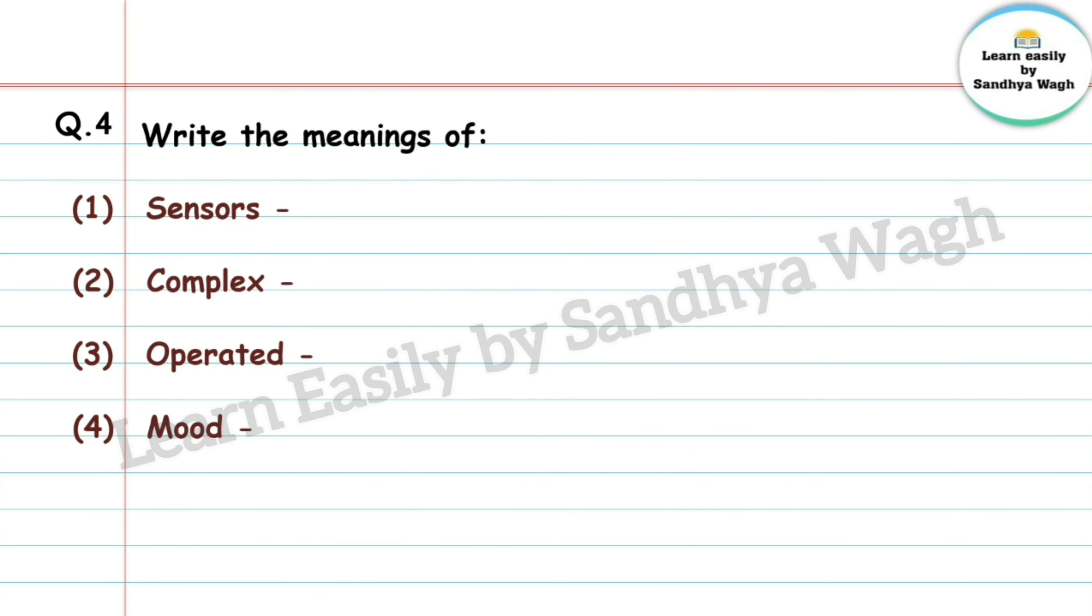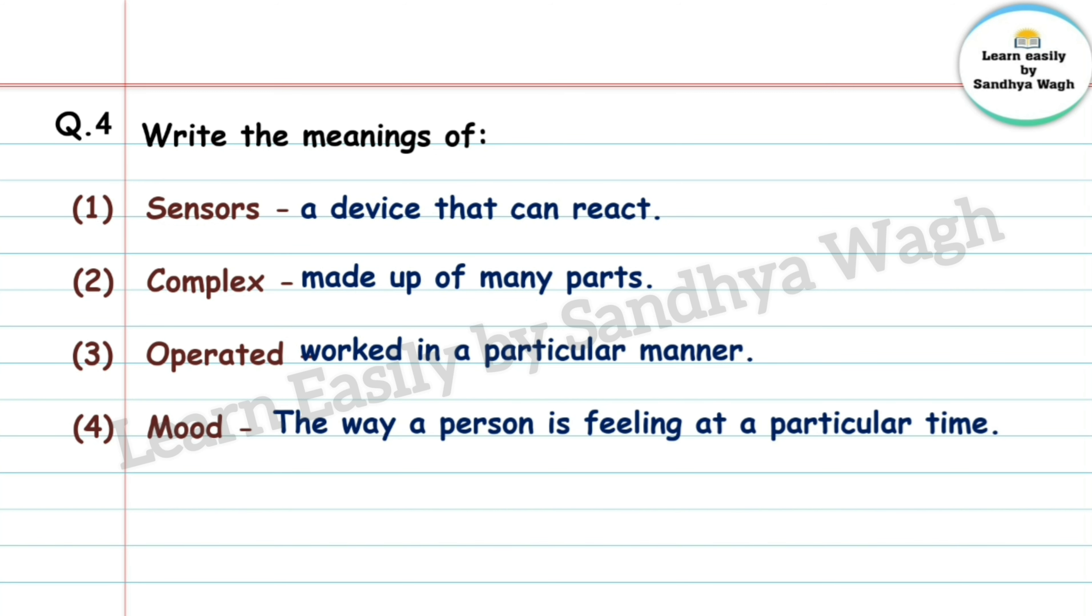Question 4: Write the meanings. Sensors means a device that can react. Complex: made up of many parts. Operated means worked in a particular manner. Mood: the way a person is feeling at a particular time.